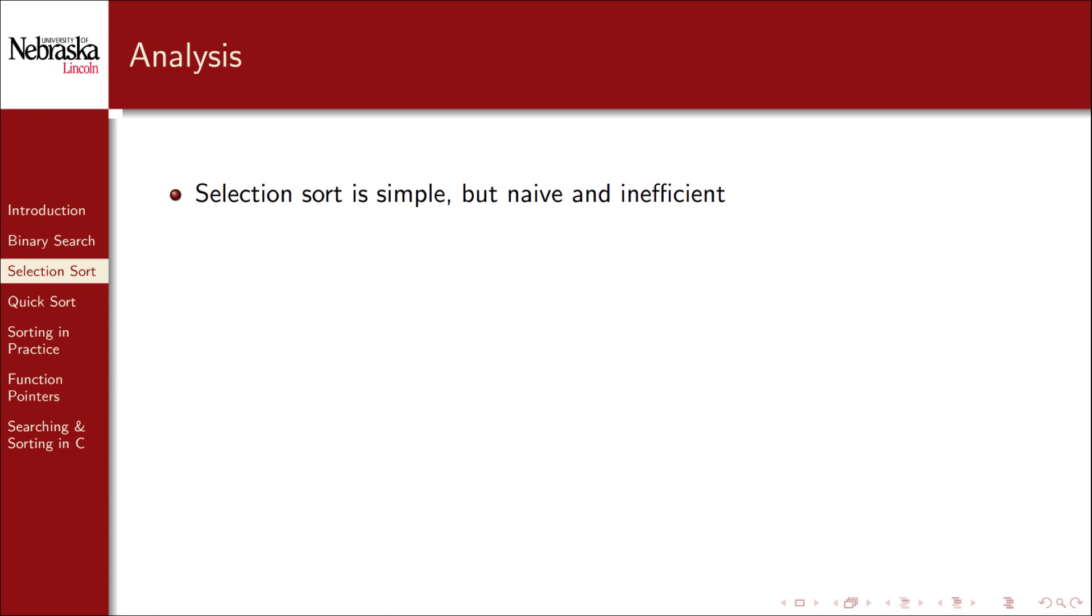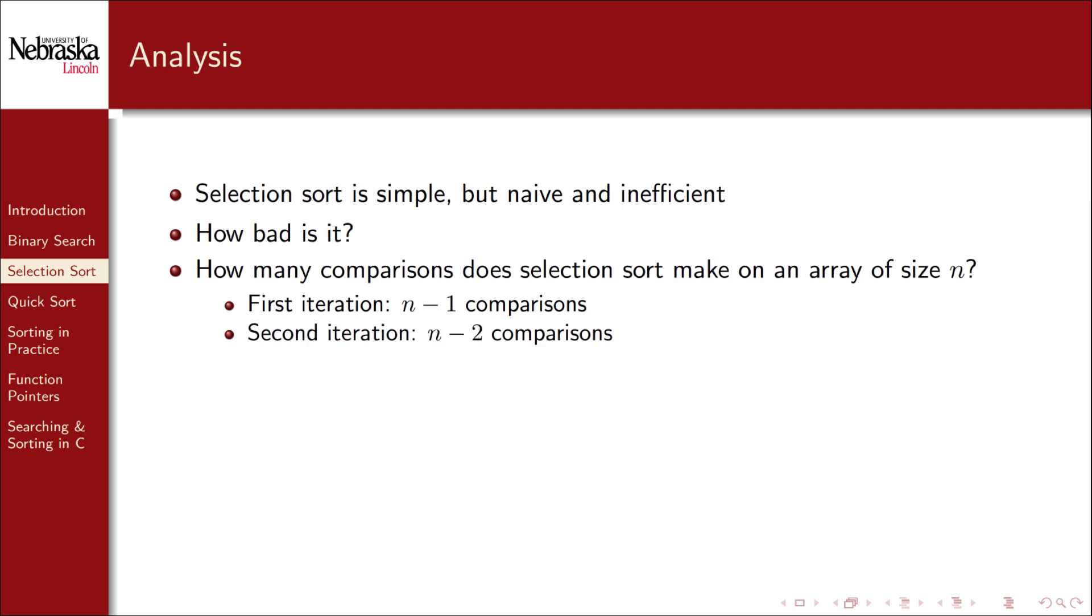Selection sort is a simple algorithm, but it's also naive and inefficient. But just how bad is it? Similar to searching, we'll analyze selection sort by examining the number of comparisons that it makes sorting an array of size n. On the first iteration it makes n minus 1 comparisons to find the minimum element. On the second iteration it only has to make n minus 2 comparisons because it's eliminated one of the elements from consideration, having sorted it and placed it at the front of the list.